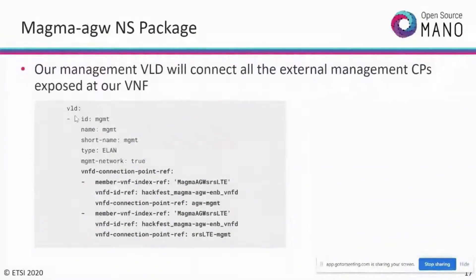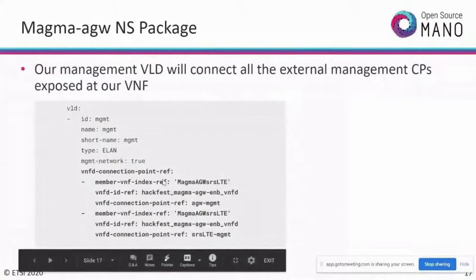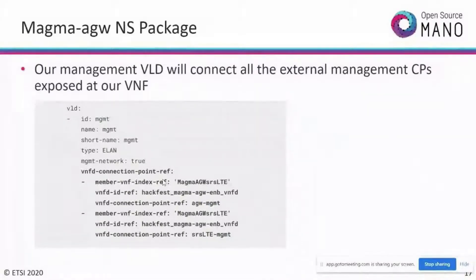Looking at the diagram, the blue-highlighted parts are what we describe in the NS descriptor. In the VNF, we gave three connection points, of which two are for management. We declare these in the NS descriptor's VLD section. A management network key set to true helps the network service identify that this network is for configuration purposes, causing OSM to attach the connection point to the configured management network in the VIM.